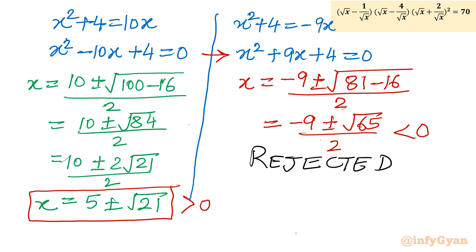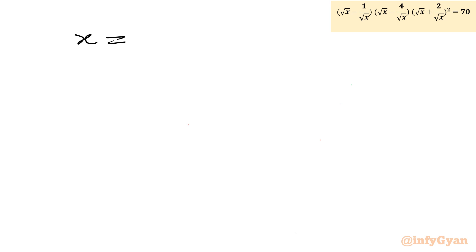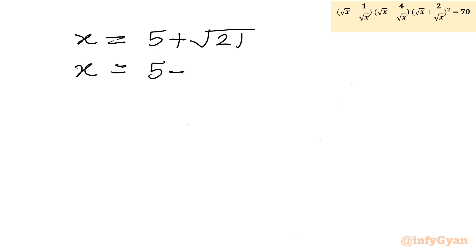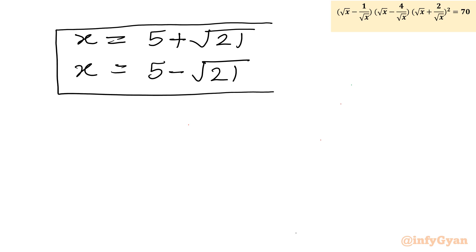The accepted solutions are x = 5 + √21 and x = 5 − √21. Both values are positive, satisfying the domain requirement. I hope this video was meaningful to you. Don't forget to like, share, and subscribe. Bye-bye till the next video. Good luck, take care.